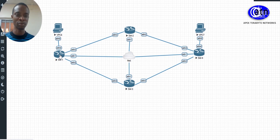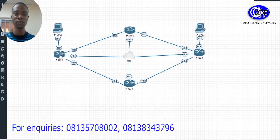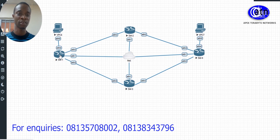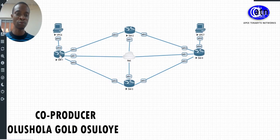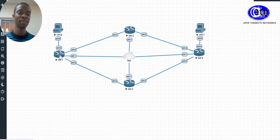You have to configure the bridge priority value manually. There are different default values configured on MikroTik devices, but if you maintain those default values, it might not achieve the purpose you intended. So it is better to manually configure the bridge priority. The lowest priority value will serve as the root bridge, and it is in hexadecimal.